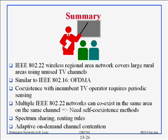That brings us to the end of 802.22. Summary: it is a regional area network, it covers a large distance, generally for rural areas, using unused TV channels. Much of this standard is devoted to just determining what is unused and how to move from one channel to the next. Much of it is very similar to 802.16 in terms of the physical layer stuff — OFDMA, upstream, downstream, TDD, FDD — all of those things are very similar including the framing. The main new stuff is the CBP, the coexistence protocol.